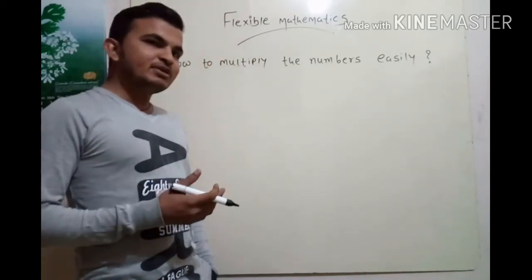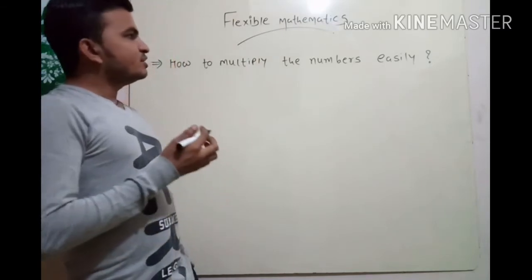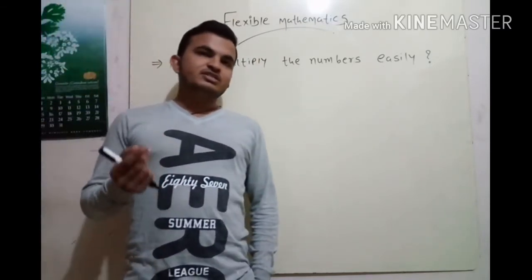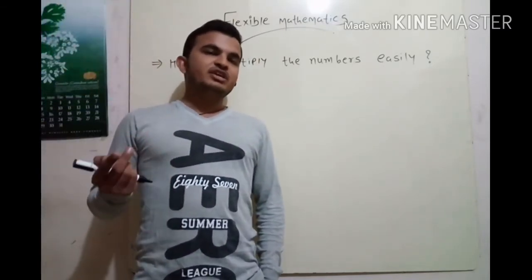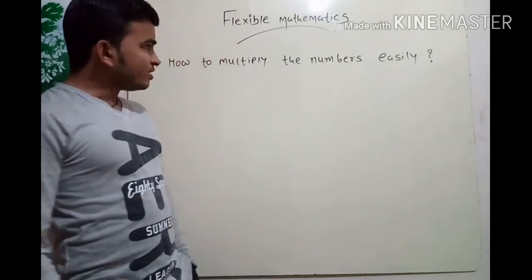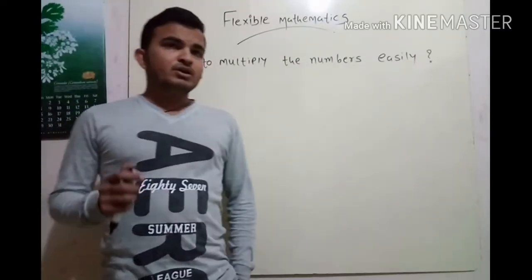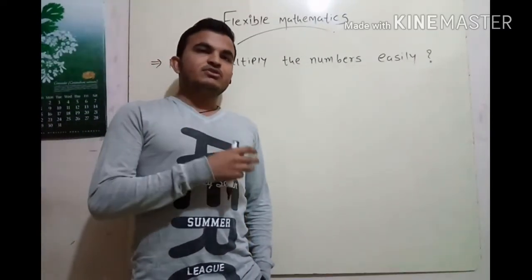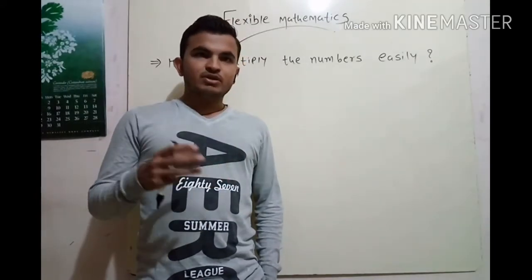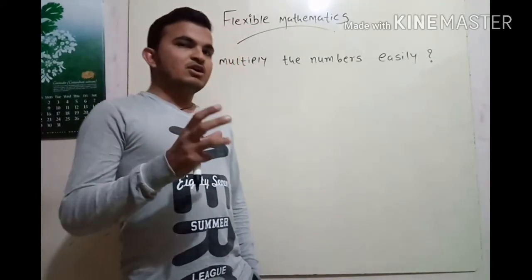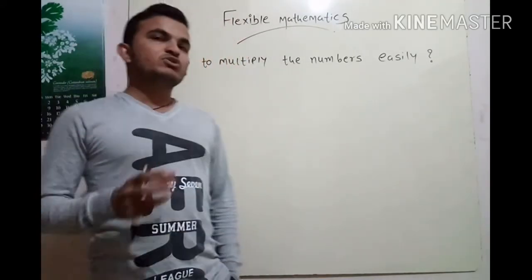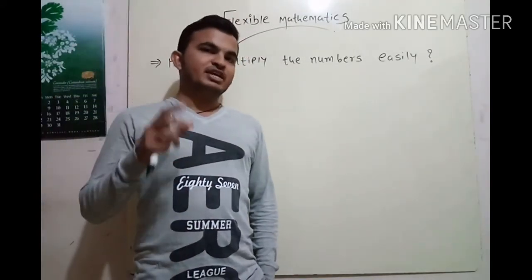By using this method you can easily multiply numbers of single digit, two digit, three digit, and so on. This trick is already available on YouTube, but in some cases there is a complication, and what to do in that case — that I will tell you today.